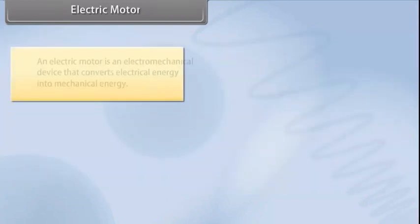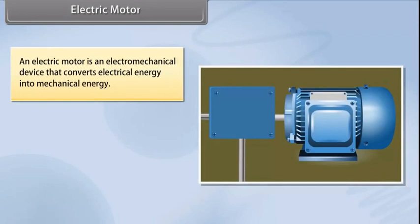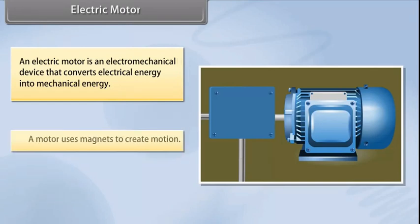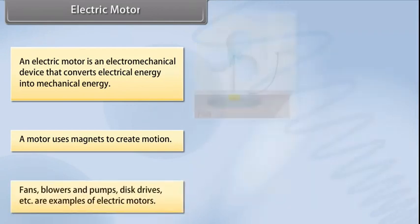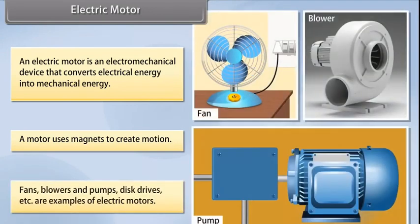Let's look at how electric motors work. A motor uses magnets to create motion. Inside an electric motor, the attracting and repelling forces of a magnet create rotational motion. Fans, blowers, and pumps, disc drives, etc. are some examples of electric motors.